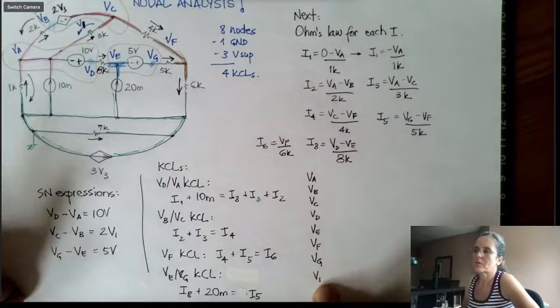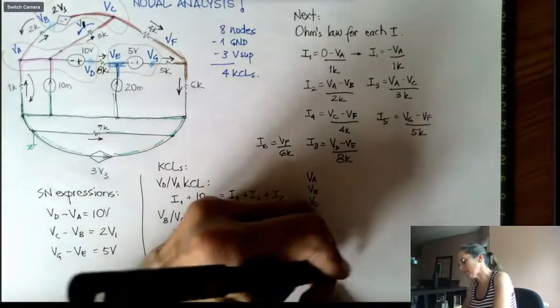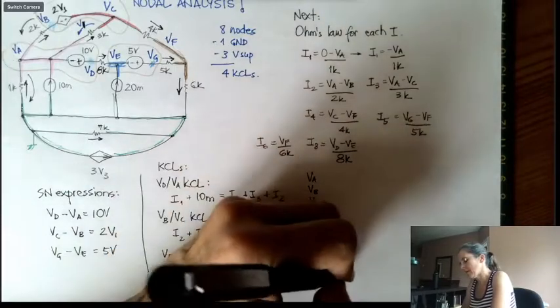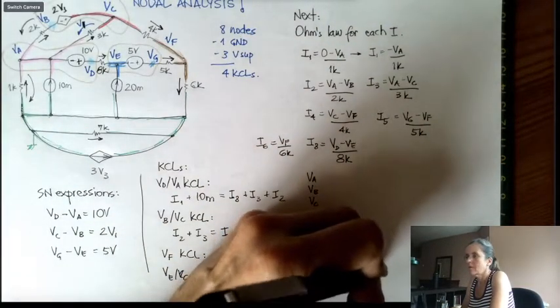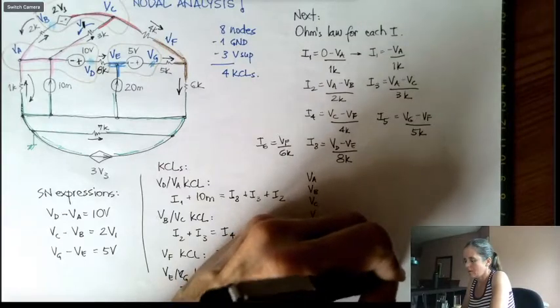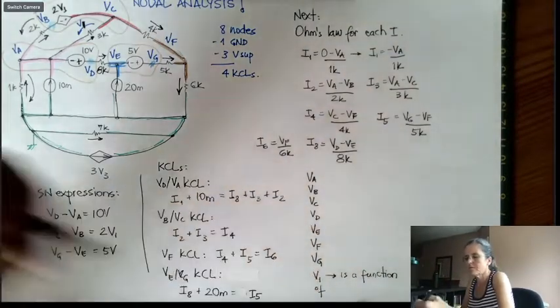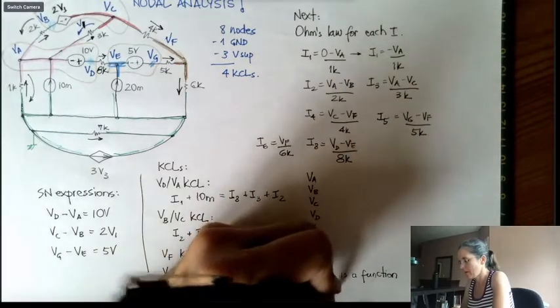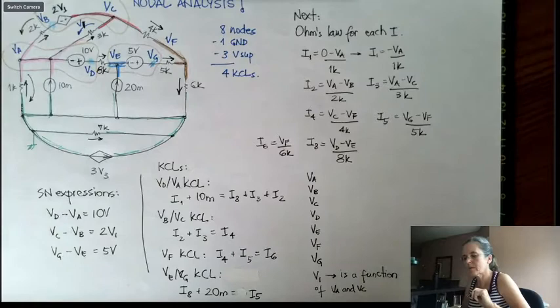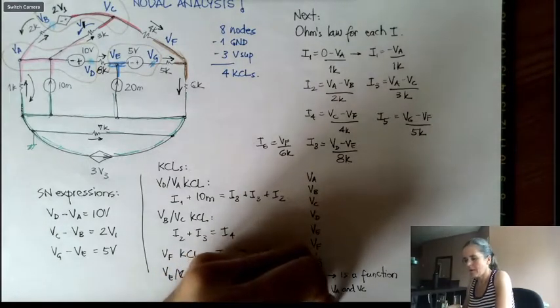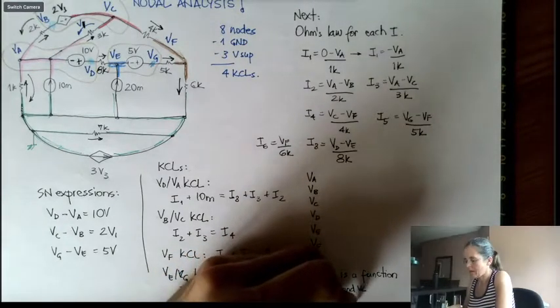8 equations. But I'm going to say that V1 is a function of VA and VC. So it's really V1 is VA minus VC.